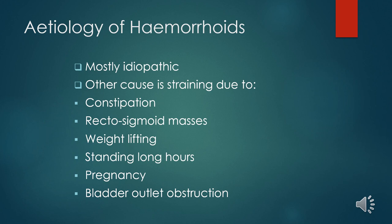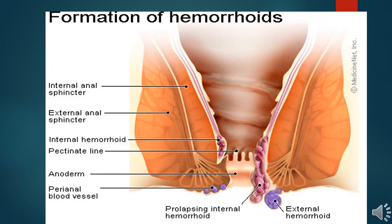Weightlifting can predispose one to developing hemorrhoids. Standing long hours, sitting long hours, pregnancy, and even bladder outflow obstruction can lead to development of hemorrhoids. Hemorrhoids basically form because of increased pressure in the anorectal canal. This picture also depicts hemorrhoids and the anorectal canal with the internal and external anal sphincters that help to close and assist with bowel opening.